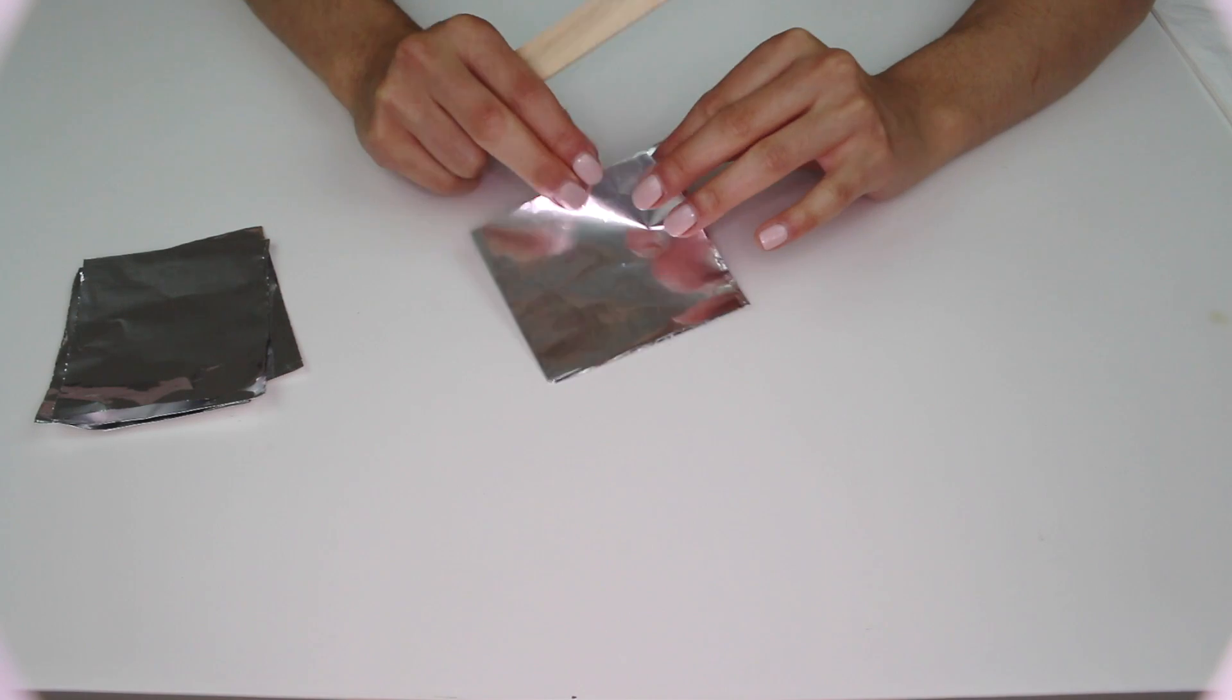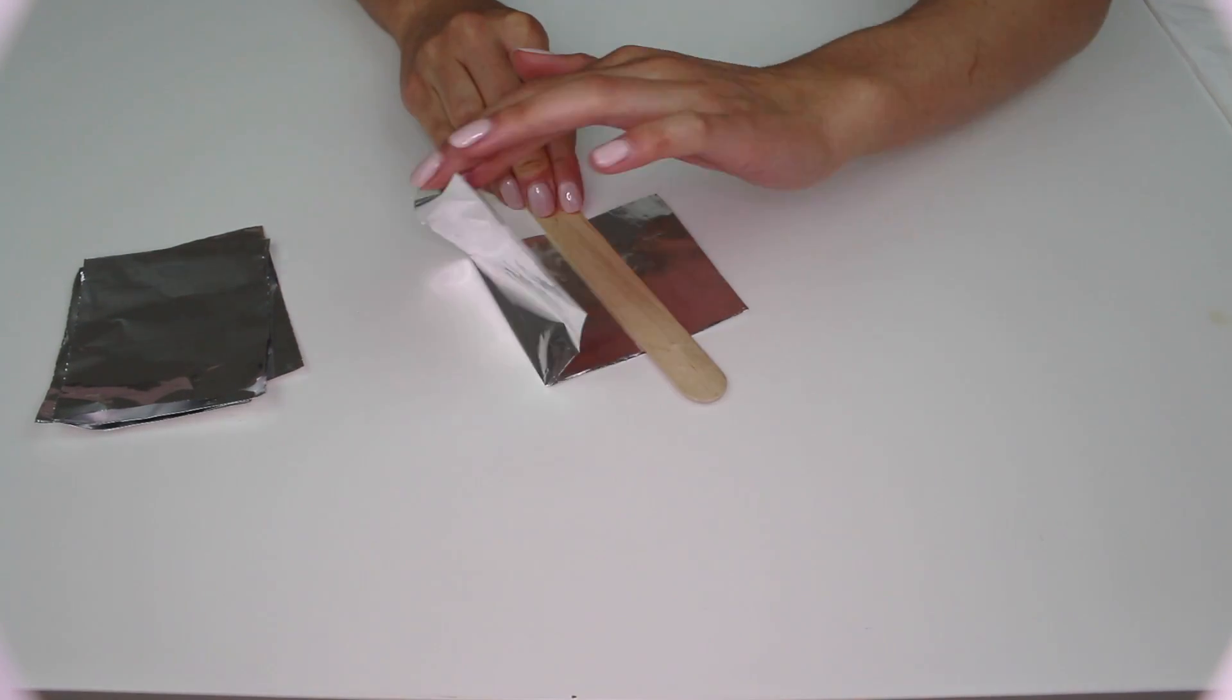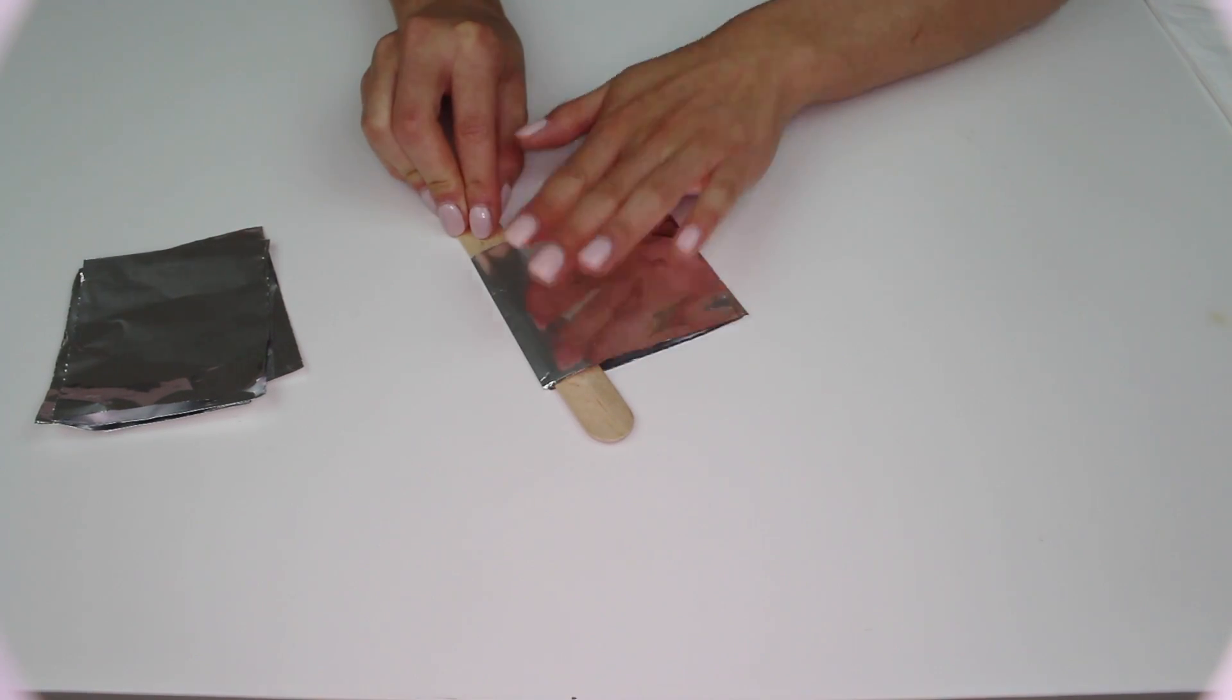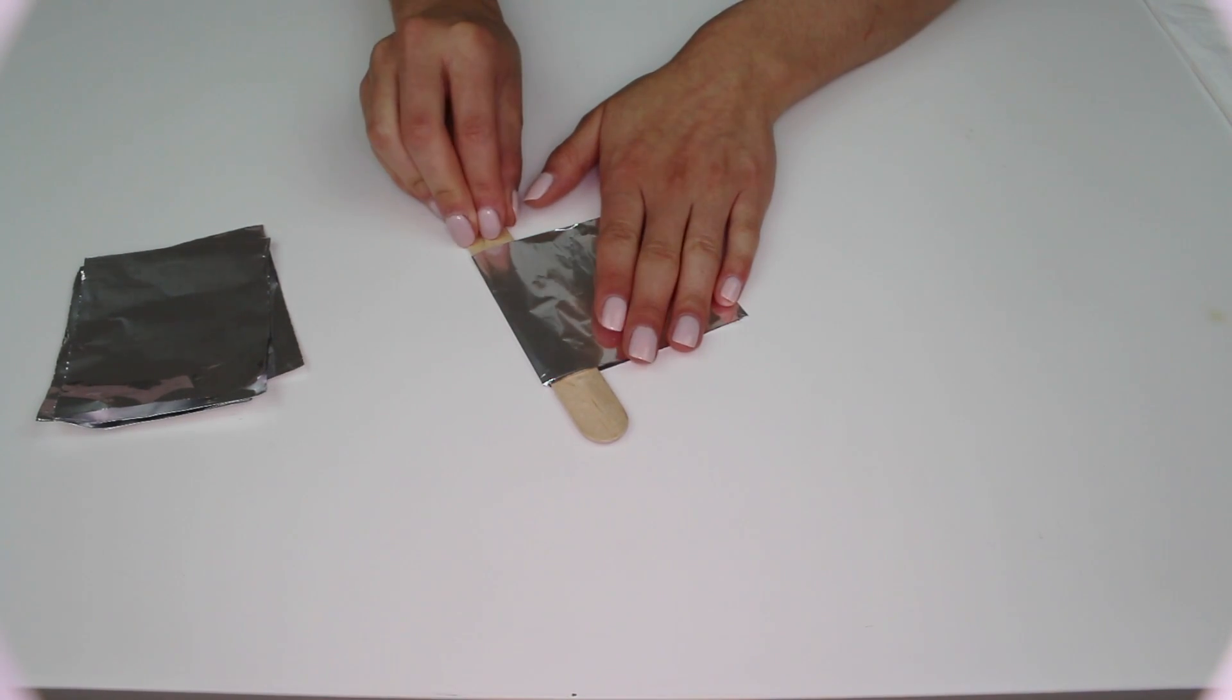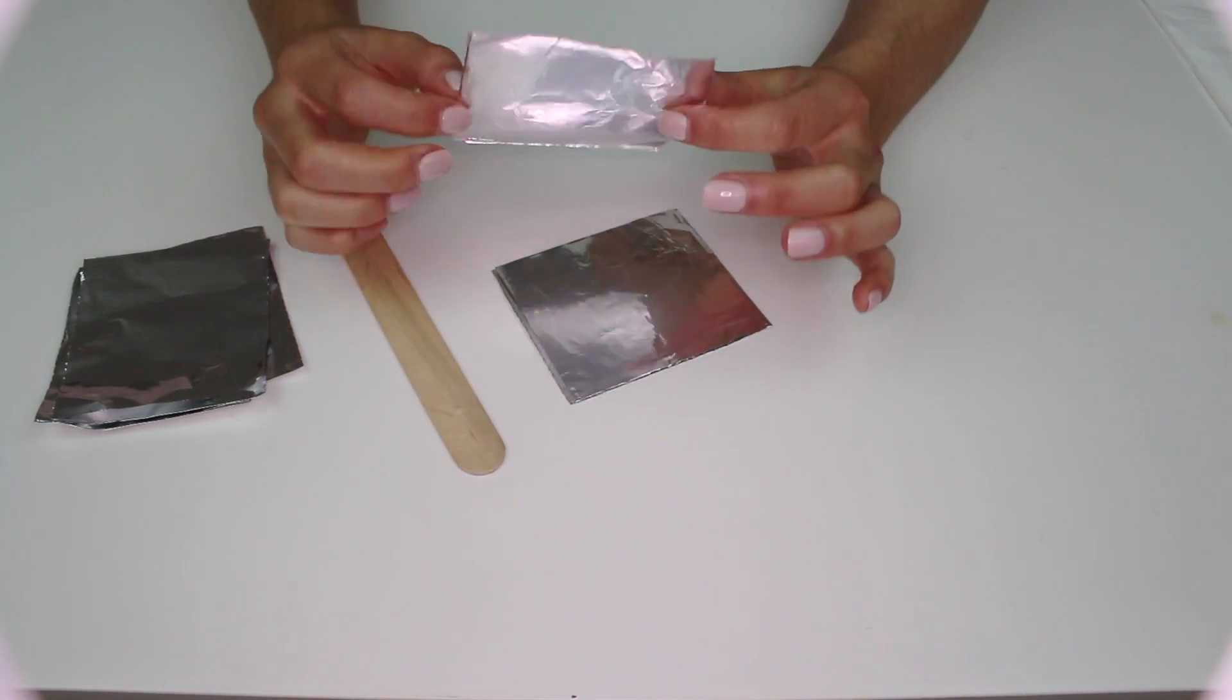The first time you try this it is going to be difficult but once you get used to it you'll get faster and faster. Now make sure that this is all sealed down properly and then unfold it just this much. And then cut these bits off like this.